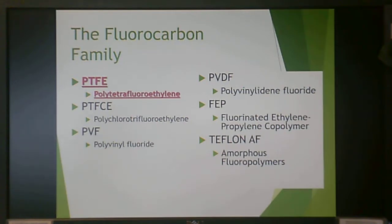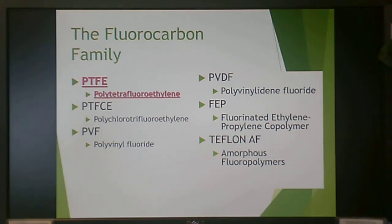There are a variety of other fluorocarbons in this family: polychlorotrifluoroethylene, polyvinyl fluoride (the fluorine version of polyvinyl chloride), polyvinylidene fluoride (the fluorine version of polyvinylidene chloride), fluorinated ethylene propylene copolymer, and Teflon AF — an amorphous version of Teflon. Teflon itself is very crystalline.